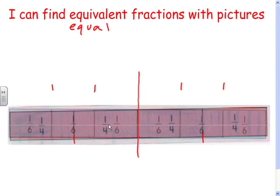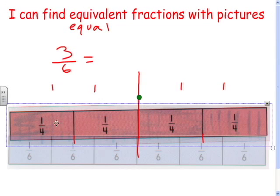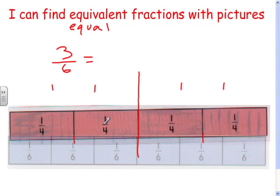So how many sixths are there? One, two, three. Three sixths is equal to how many fourths? One, two. Two fourths. So those are equivalent fractions.